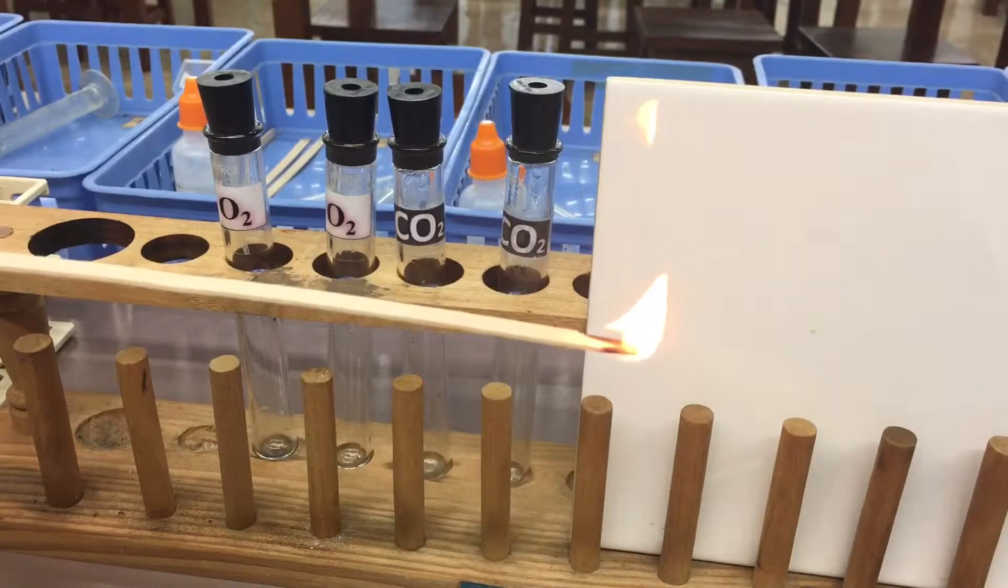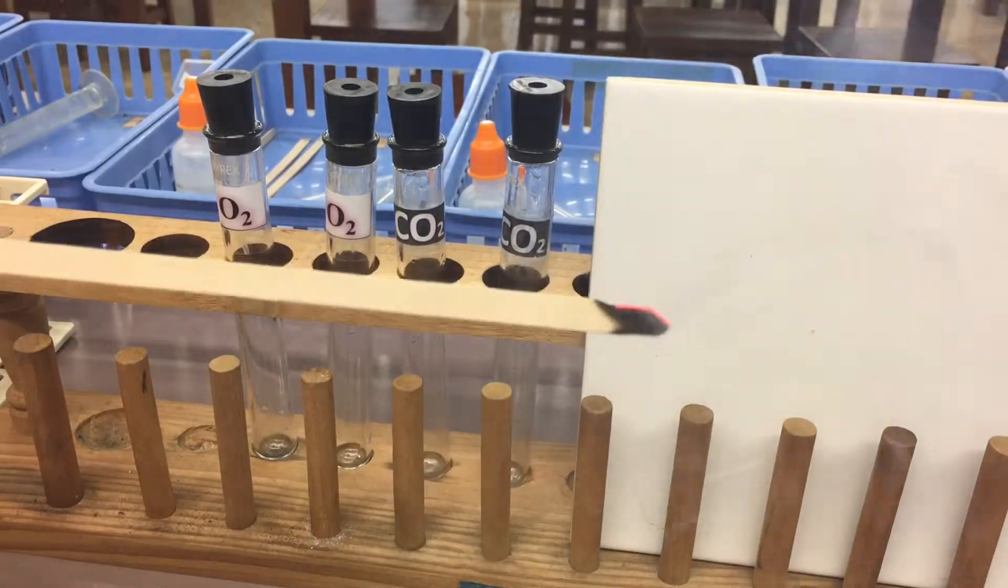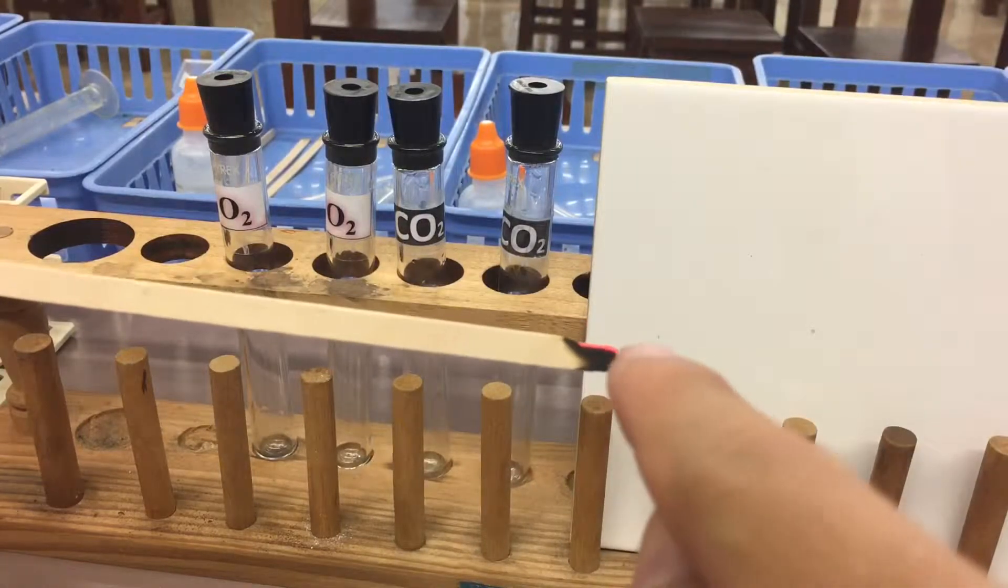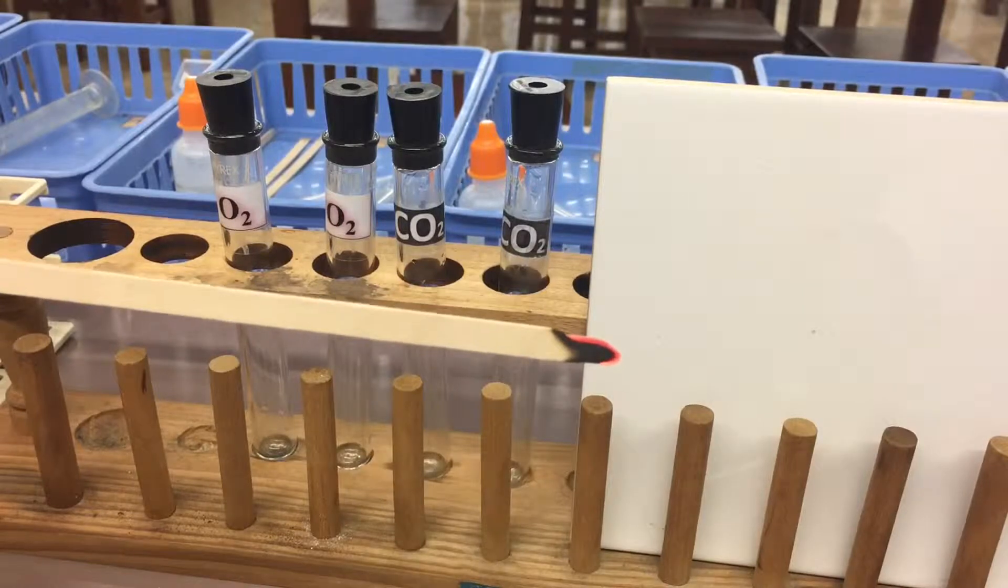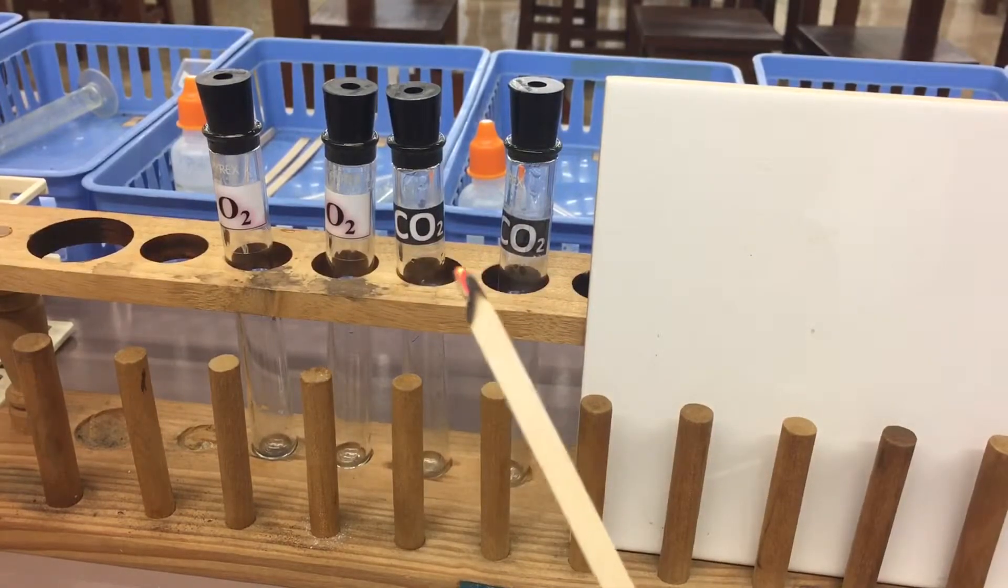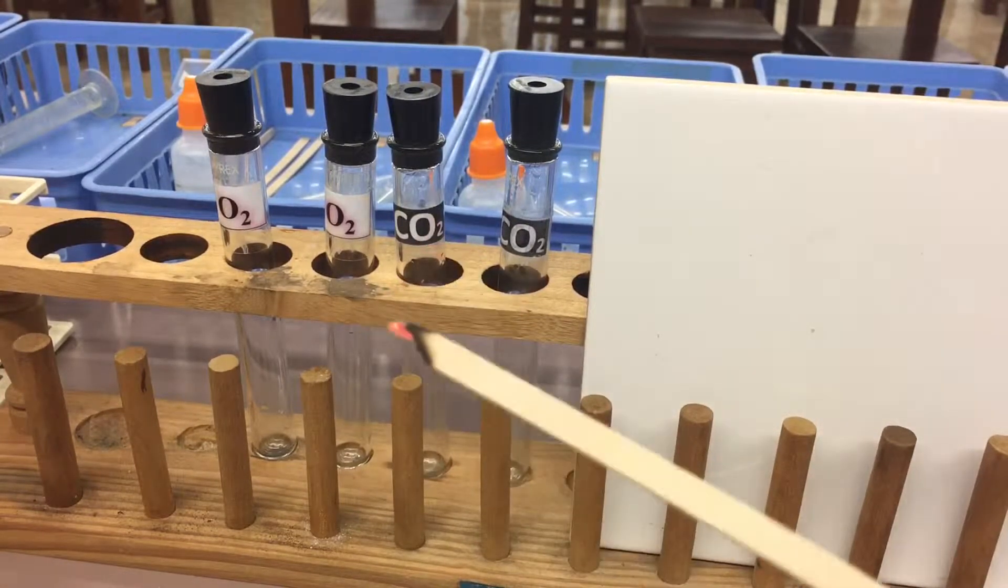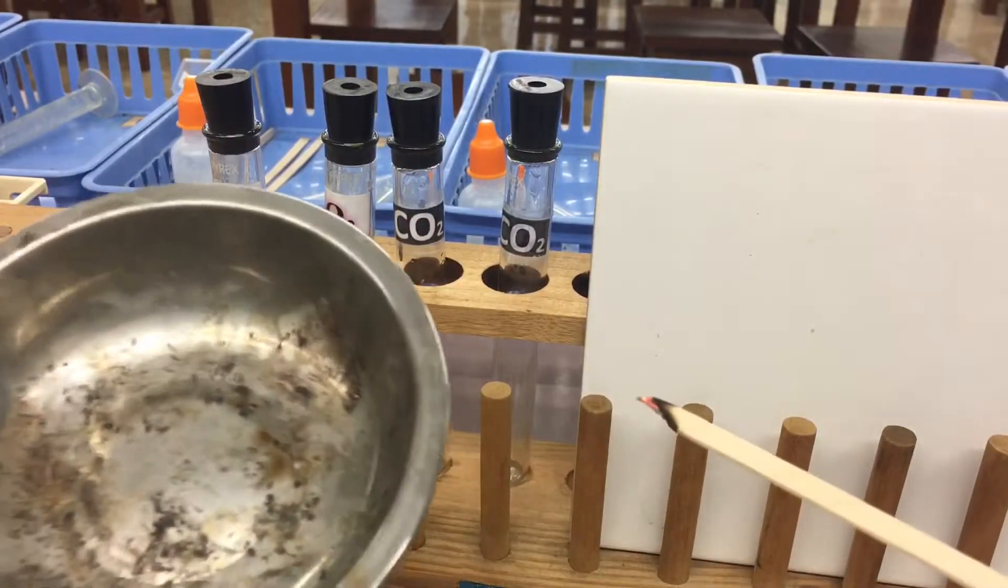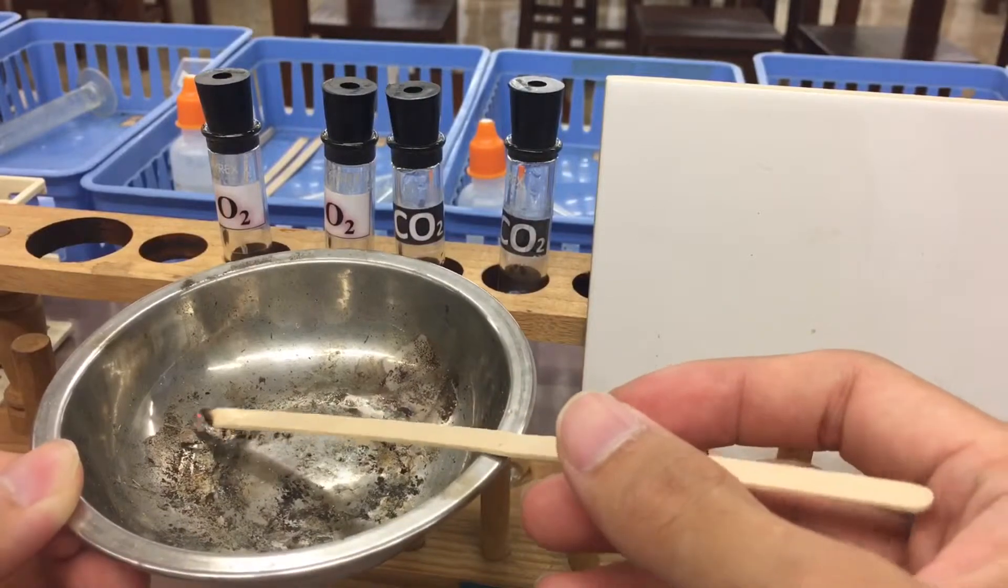But when the fire goes off and you can see some red colors on the splint, here is the glowing splint. After we use the burning splint or the glowing splint, we put the splint into it without burning the table.